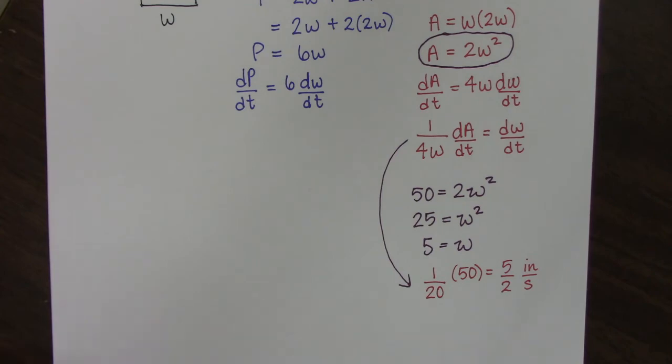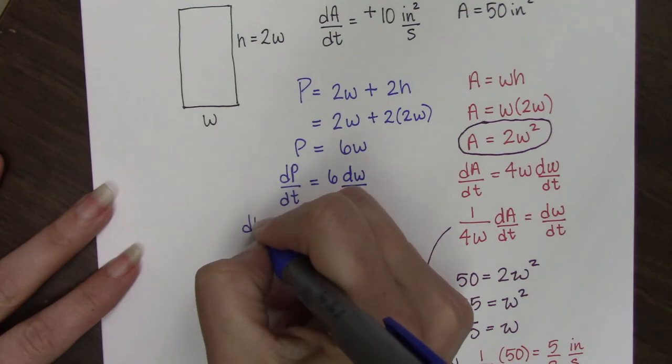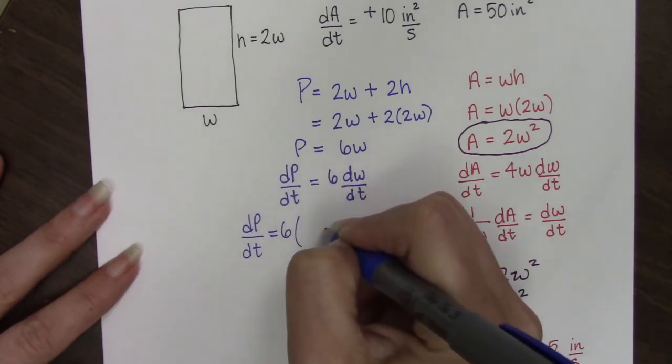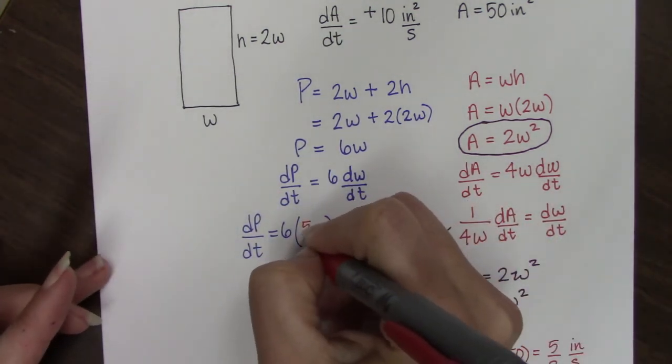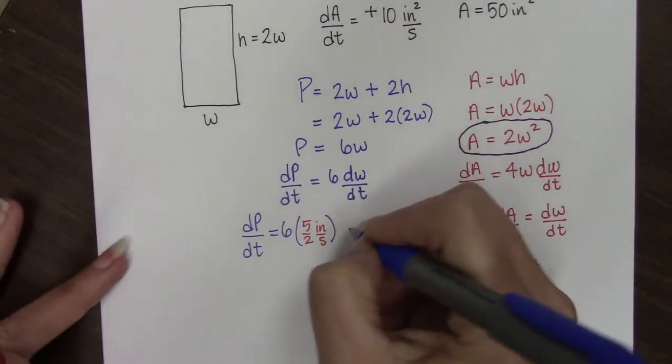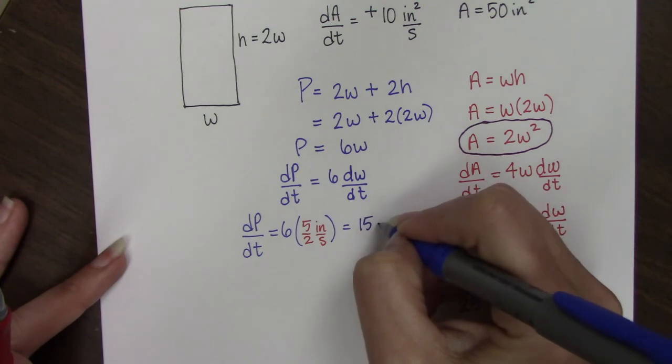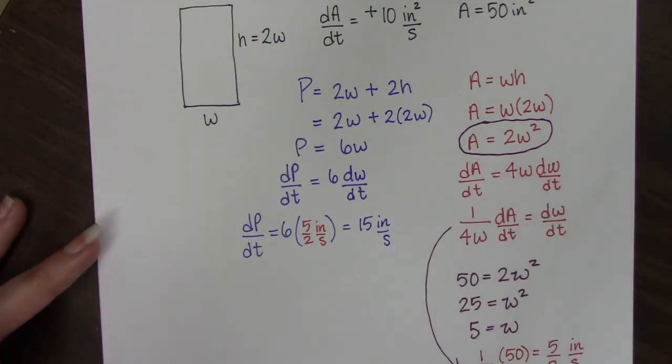Now I can come back and solve for the rate of my perimeter. So dP/dt equals 6 times 5 halves inches per second, and this is 30 over 2, which is 15 inches per second.